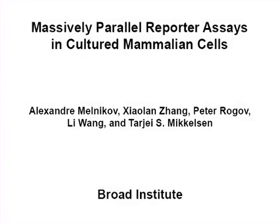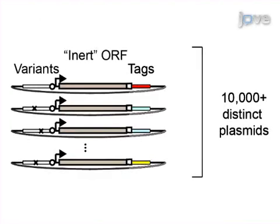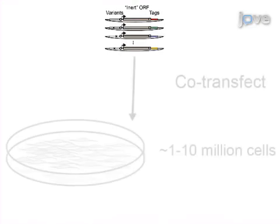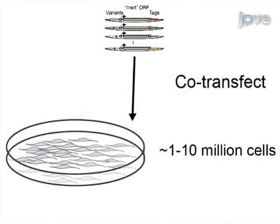The overall goal of this procedure is to assay the gene regulatory activities of thousands of DNA sequences in parallel. This is accomplished by first constructing a reporter library where the DNA sequences of interest are linked to reporter genes with one or more identifying sequence tags in their three prime UTRs. The second step of the procedure is to transfect this reporter library into a population of cells.